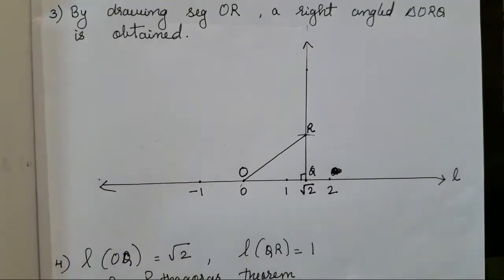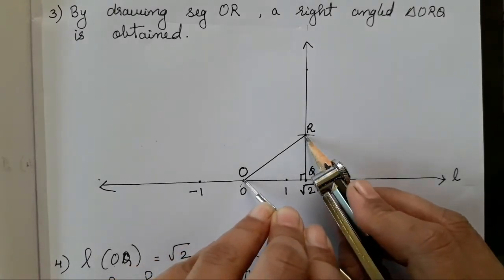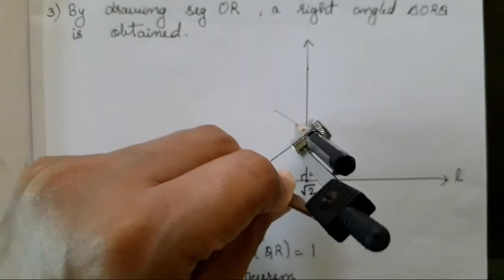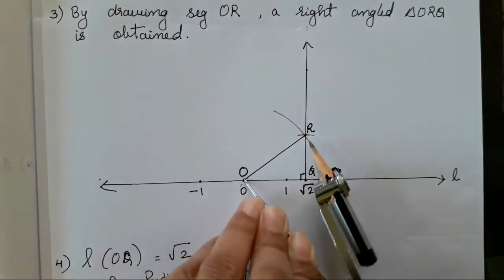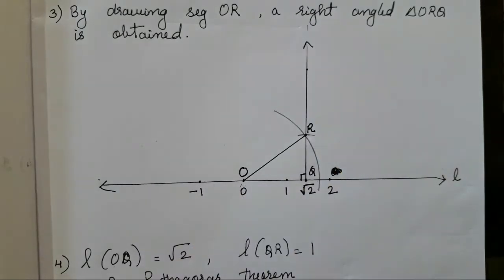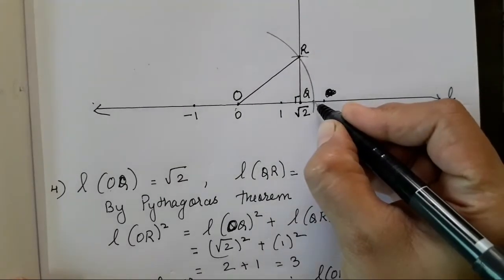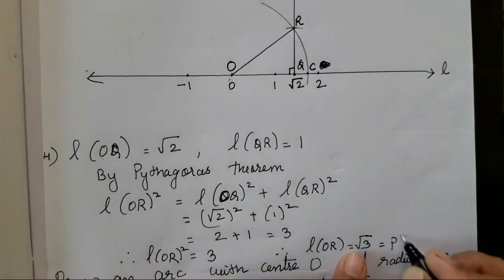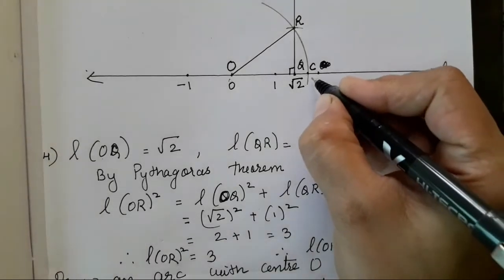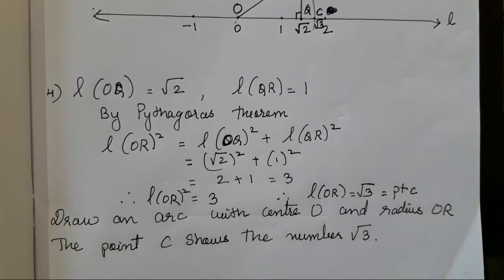The next step is we have to take the distance of O and R and then draw an arc passing through point R. In this way we have taken this distance. We have drawn it. So the point that we have got is supposed to be point C, which is root 3. In this way you all have to draw a number line.